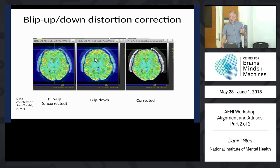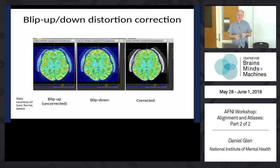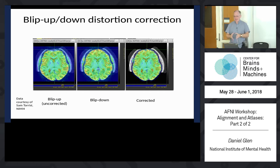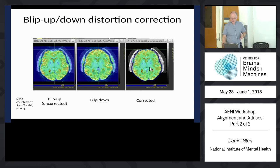This is different from a field map correction. Field map corrections are done over a much smoother field, though the goal is the same. We did a comparison of field map correction versus this versus FSL's topup, and for our data at NIH, this worked better. The corrected dataset - the in-between of blip-up and blip-down - was shown on our 7T scanner. It depends on your data whether you need it and how well it works.